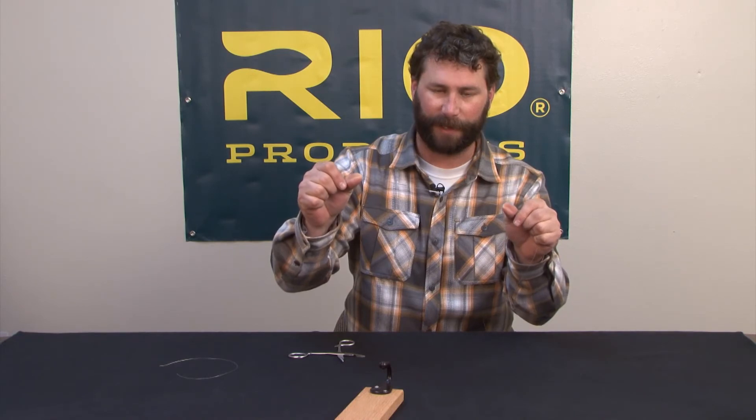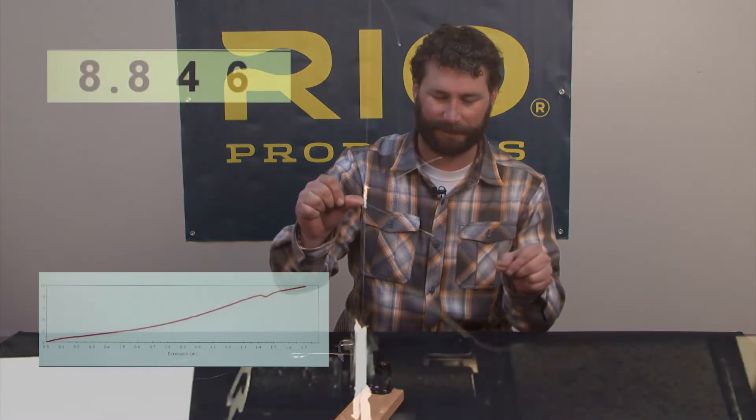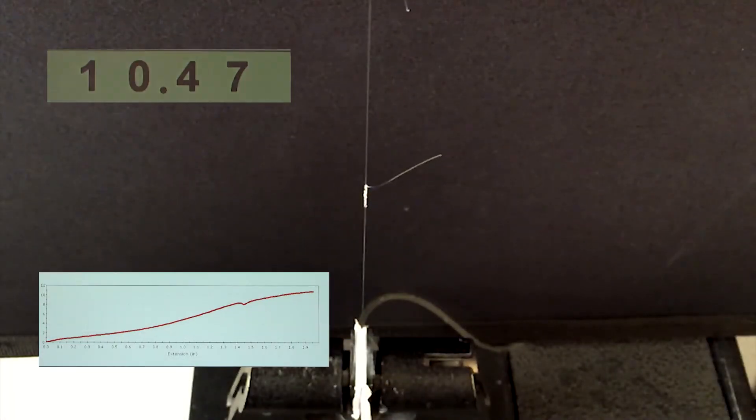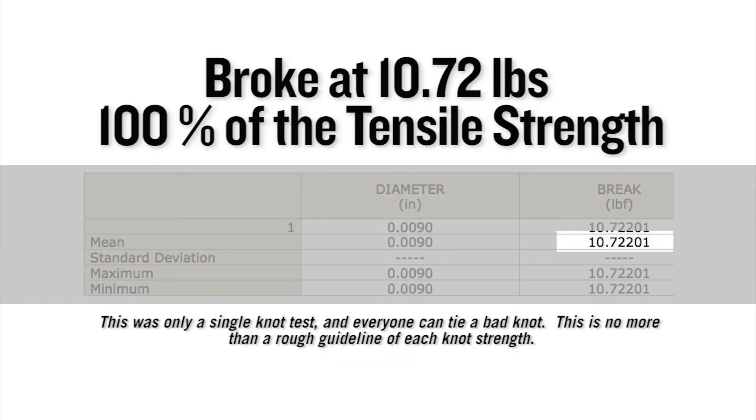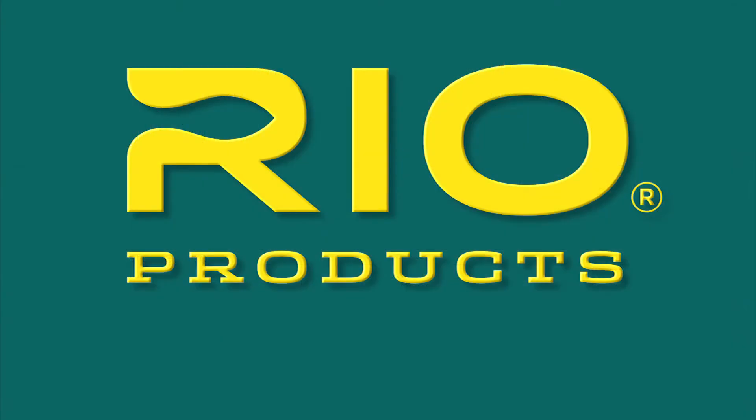And that is the finished bimini twist. On a single Instron test, this knot broke at 10.72 pounds, which equates to 100% of the tensile strength of the nylon it was tied in. Rio, make the connection.